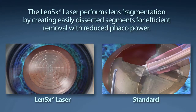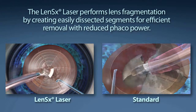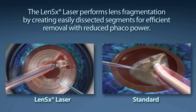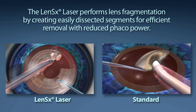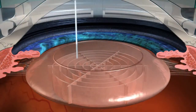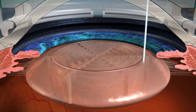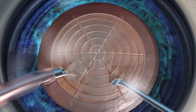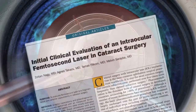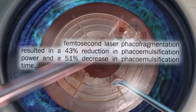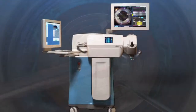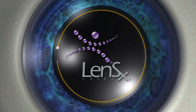Standard cataract surgery requires a phacoemulsification machine to segment and remove the content of the cataract. The goal of your surgeon is to reduce the amount of phaco energy used to remove your cataract. The LensX laser performs lens fragmentation, creating easily dissected segments for efficient removal with little or no phaco power. With the laser pulses utilized, the LensX laser provides the surgeon a 43% reduction in phaco power and a 51% reduction in phaco time compared to the standard cataract procedure. LensX laser refractive cataract surgery offers a new level of precision and reproducibility in ophthalmic surgery.